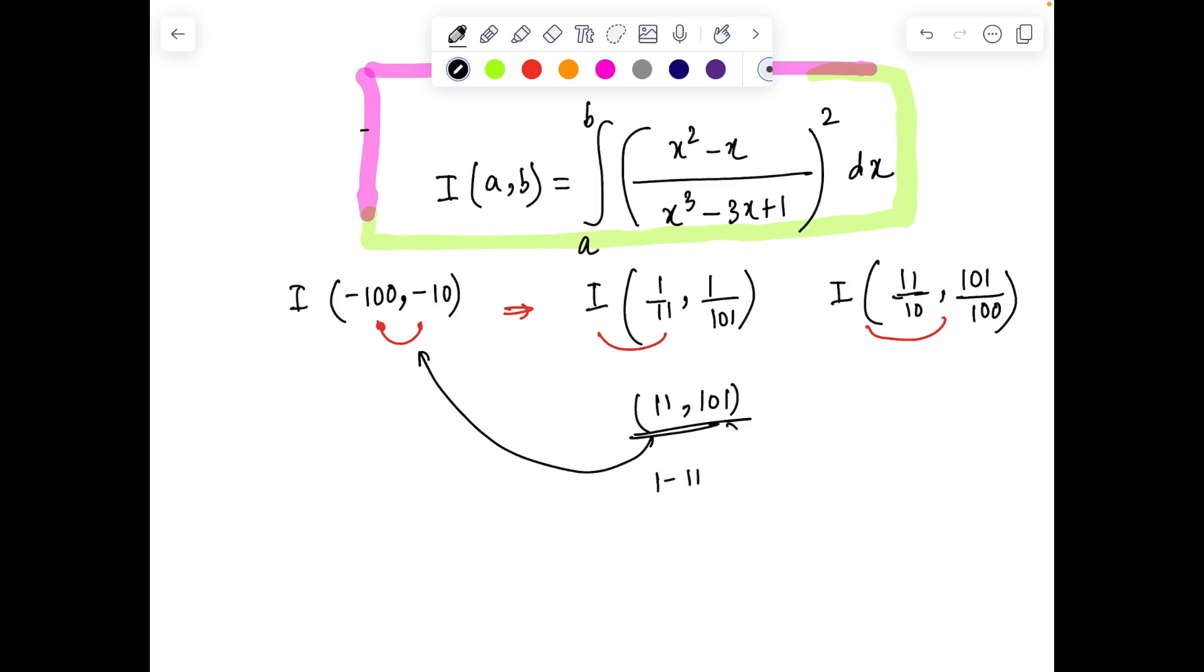Now 11 and 101 are intimately connected with -10 and -100. If I take 1 minus 11 and 1 minus 101, I'll be getting -10 and -100. Similarly, 11/10 is connected with 1/11, and 101/100 is connected with 1/100. This can be written as 1 + 1/10 and 1 + 1/100. If I take away one from both and then take the inverse, it's related to 10 and 100.